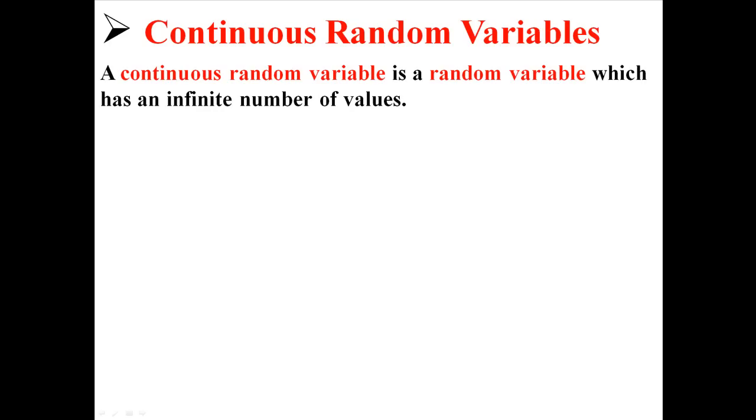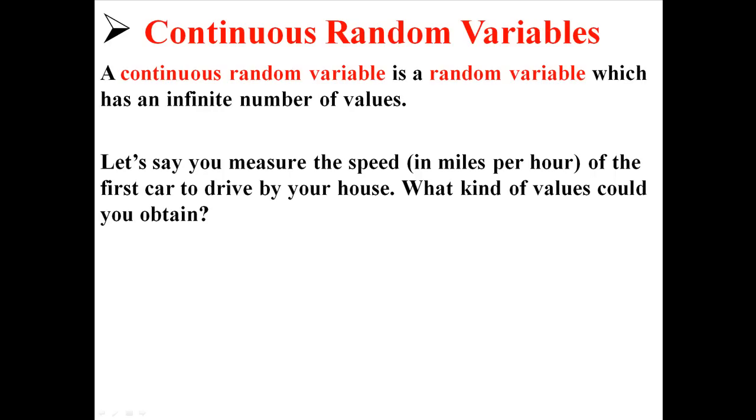But if you have something that is a continuous random variable, that is a random variable which has an infinite number of values. Like let's say you measure the speed in miles per hour of the first car to drive by your house. What kind of values could you obtain?